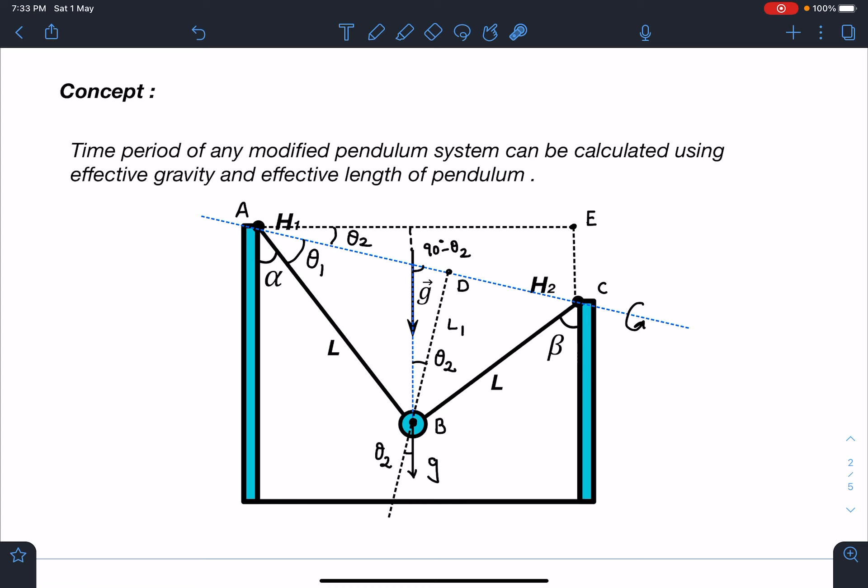So like physical pendulum, we are going to result as 2π under root of L effective and gravity component in this direction. So 2π under root of L1 by component of gravity in this direction. So here alpha is given and beta is given to us. We are assuming from our side this angle as theta1 and this angle as theta2. So somehow I have to calculate this length L1 in terms of angle alpha and this theta2 also I have to evaluate.